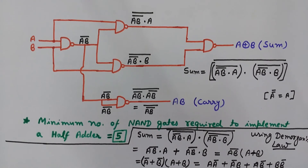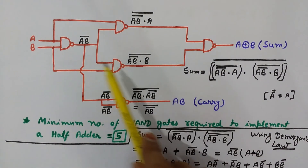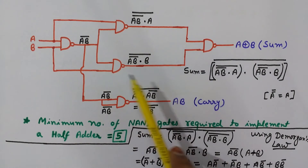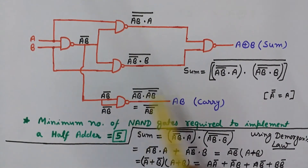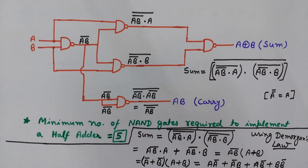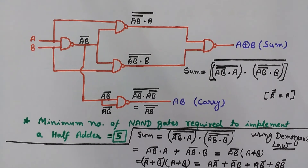So here we have seen how to represent a half adder using NAND gates. We used five NAND gates in total — one, two, three, four, five — to represent it completely. I hope you liked it, so click the like button and don't forget to subscribe to my channel Engineering Made Easy. Thanks for watching, have a nice day!